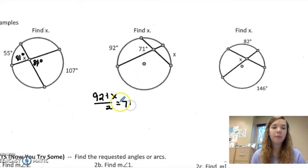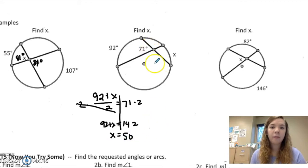equals 71 and then solve. So then I have 92 plus x equals 142, which should be 50. So this arc measure is 50.